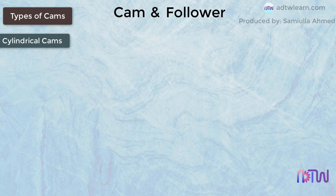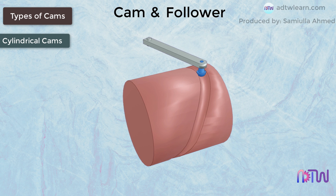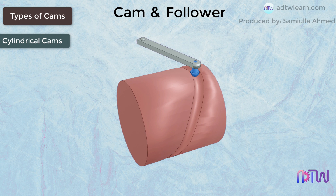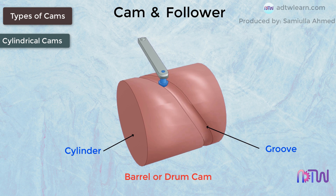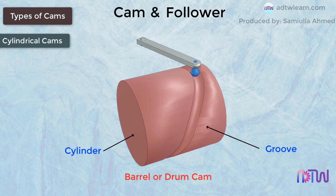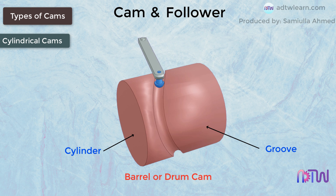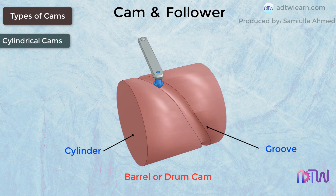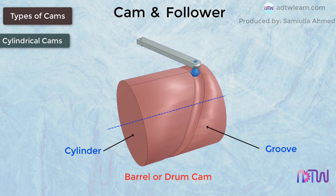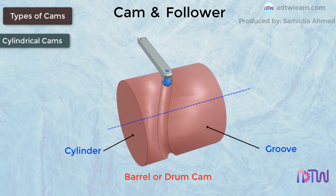The next type of cam is a cylindrical cam, also known as a barrel or drum cam. This cam is shaped like a cylinder and a groove is cut on the surface of the cam, and the follower follows the path of the groove. In this type of cam, the direction of motion of the follower is parallel to the axis of the cam.